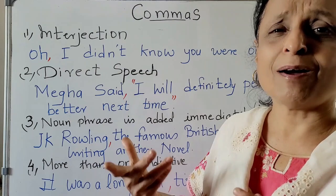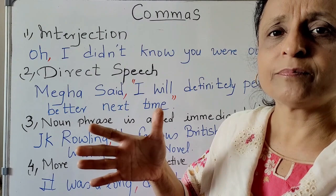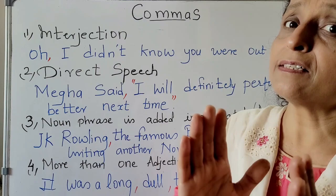Suppose you are saying 'I want pen, pencil, eraser, sharpener' — then you put a comma every time because you are listing the things you want. For all those things, you put a comma.